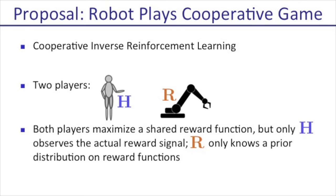We propose a model for this interaction that we call cooperative inverse reinforcement learning. This is a cooperative game with two players — the human and the robot — both trying to maximize the same reward function, which is the human's internal reward function. We represent this by allowing the human to observe the reward signal, while only giving the robot a prior on reward functions. The robot needs to infer the human's reward function from her actions, and then select actions that will help her maximize the sum of rewards.